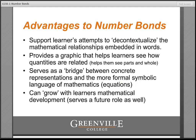Number bonds have several advantages. They are less messy than word descriptions. Word descriptions have their advantages in terms of contextualizing, but in order to see mathematical relationships, sometimes we need to decontextualize. The number bond is very helpful for allowing us to decontextualize the numbers and see what relationships are at work. Initially, at least, they make those relationships clearer than equations do, and they can also be used effectively as a bridge between concrete understanding and the more formal symbolic writing of equations.